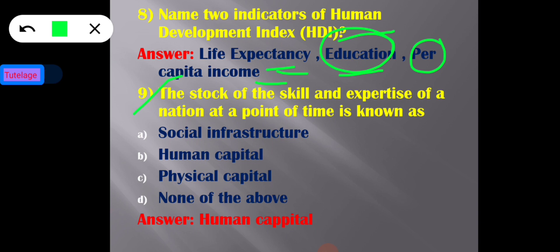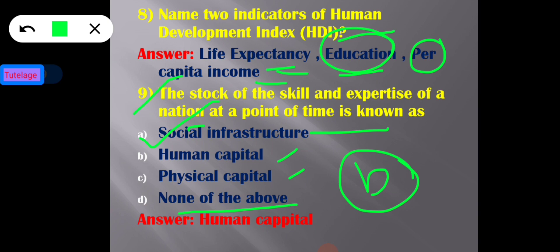The next question is: the stock of skill and expertise of a nation at a point of time is known as — social infrastructure, human capital, physical capital, or none of the above? Option B — human capital — is the correct answer. Human capital indicates the stock of knowledge, skill, or expertise of a nation and of all individuals at a point of time. That is why it is known as human capital.